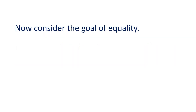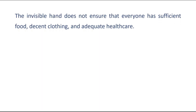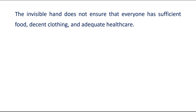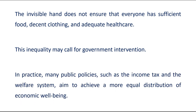Now consider the goal of equality. Even when the invisible hand is yielding efficient outcomes, it can nevertheless leave sizable disparities in economic well-being. The invisible hand does not ensure that everyone has sufficient food, decent clothing, and adequate health care. This inequality may call for government intervention. In practice, many public policies such as the income tax and the welfare system aim to achieve a more equal distribution of economic well-being.